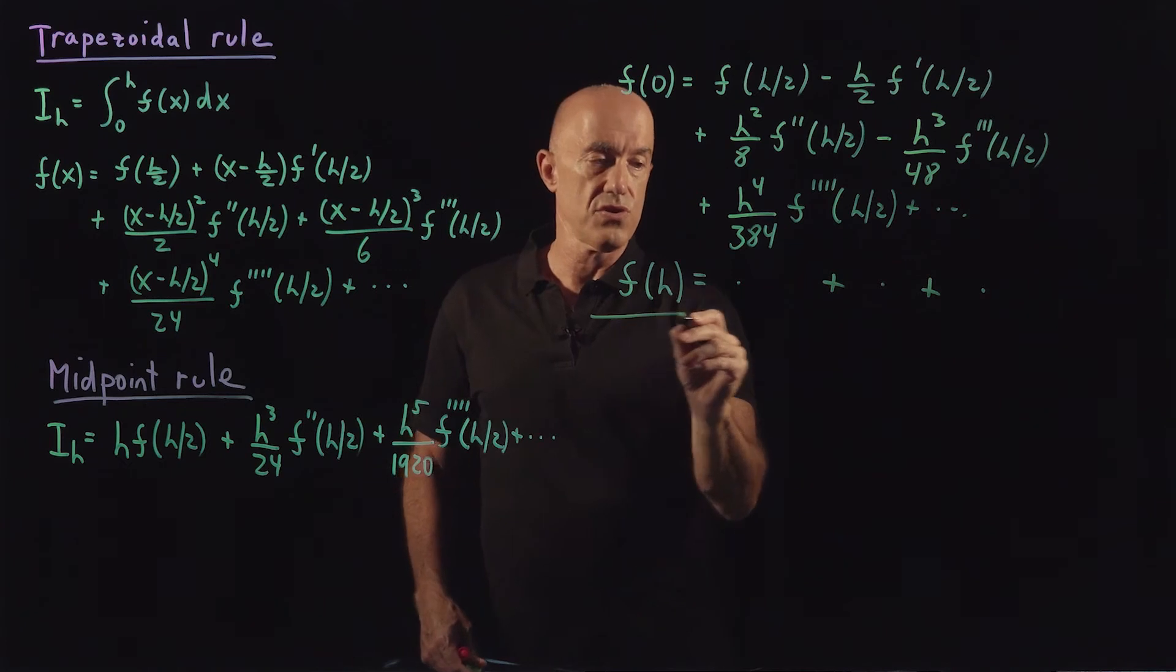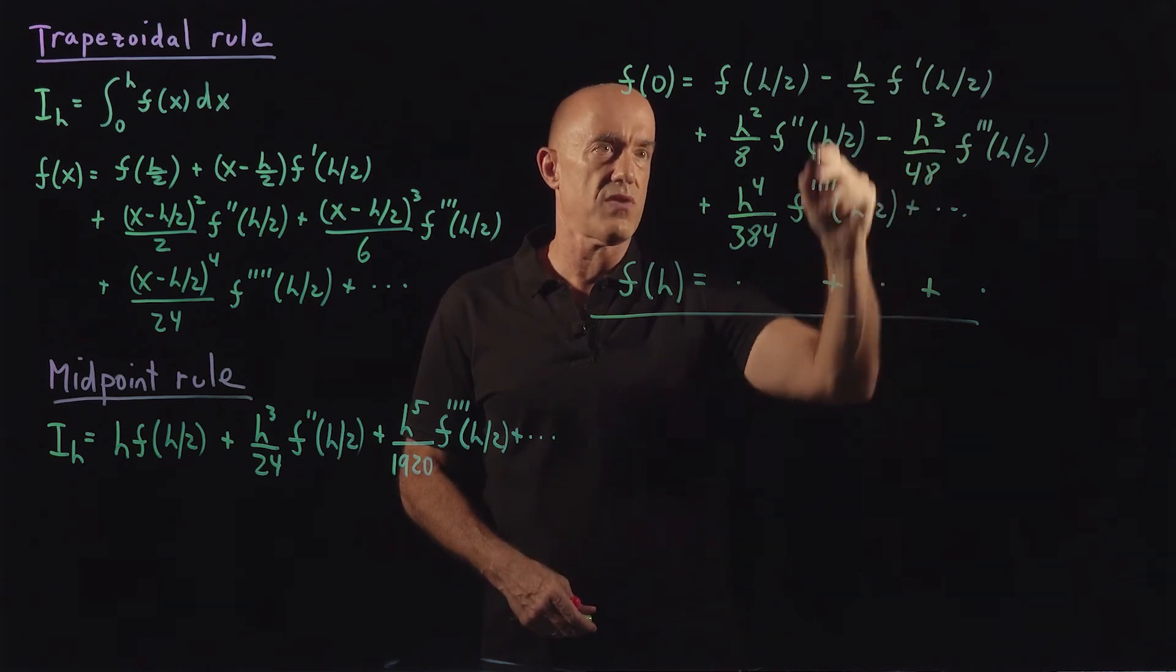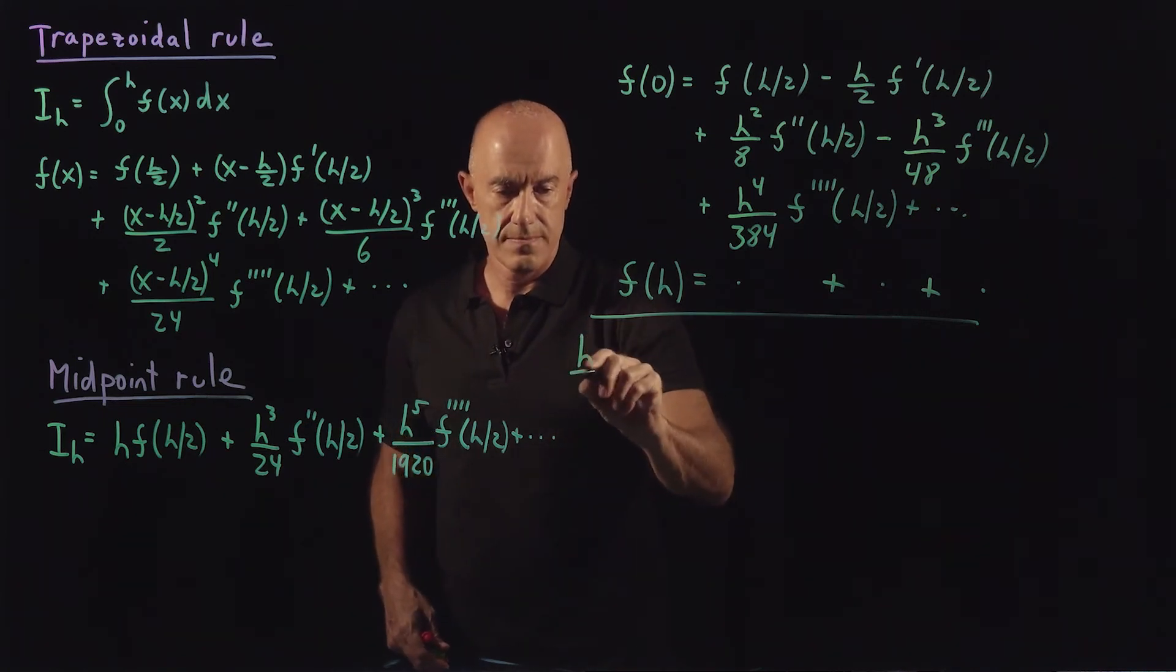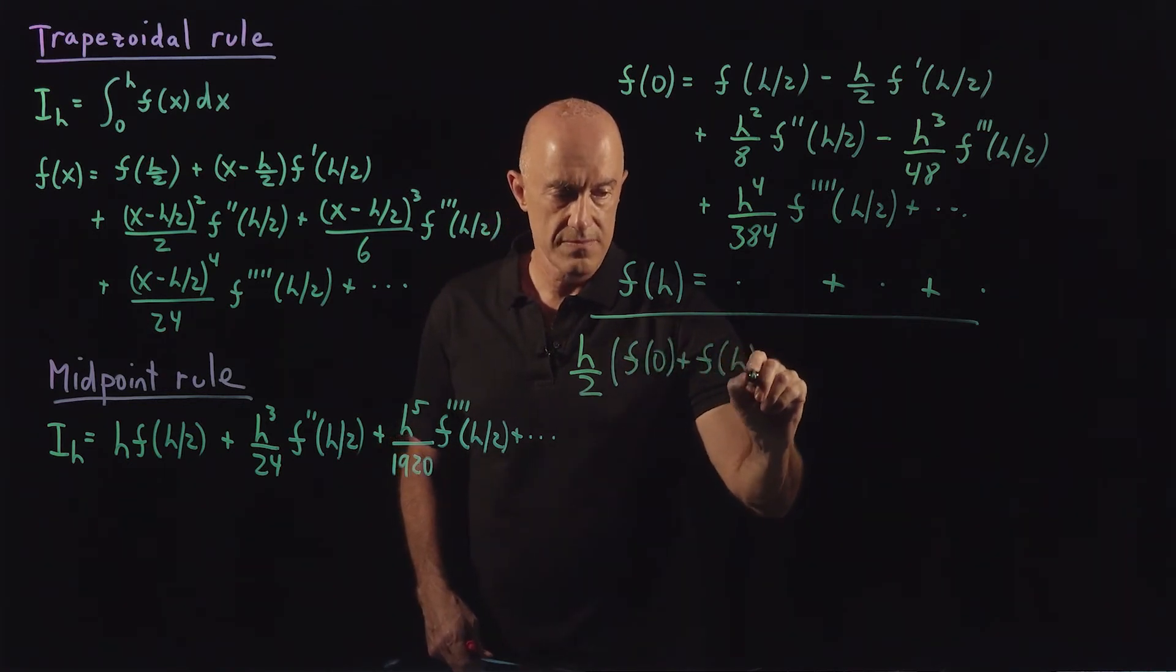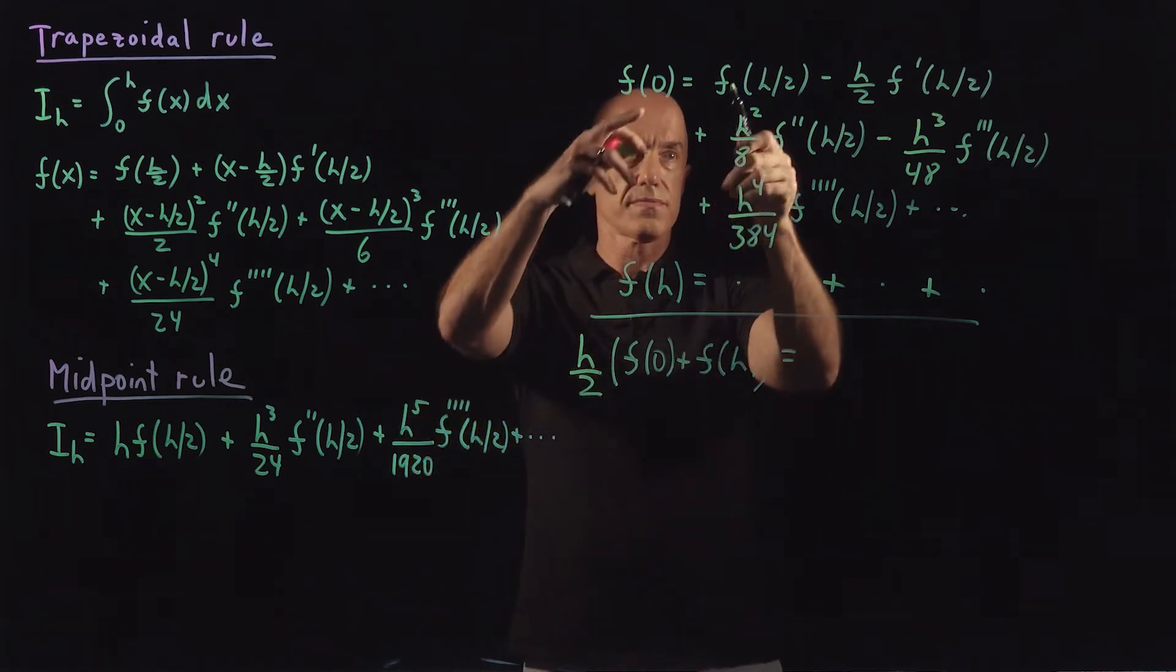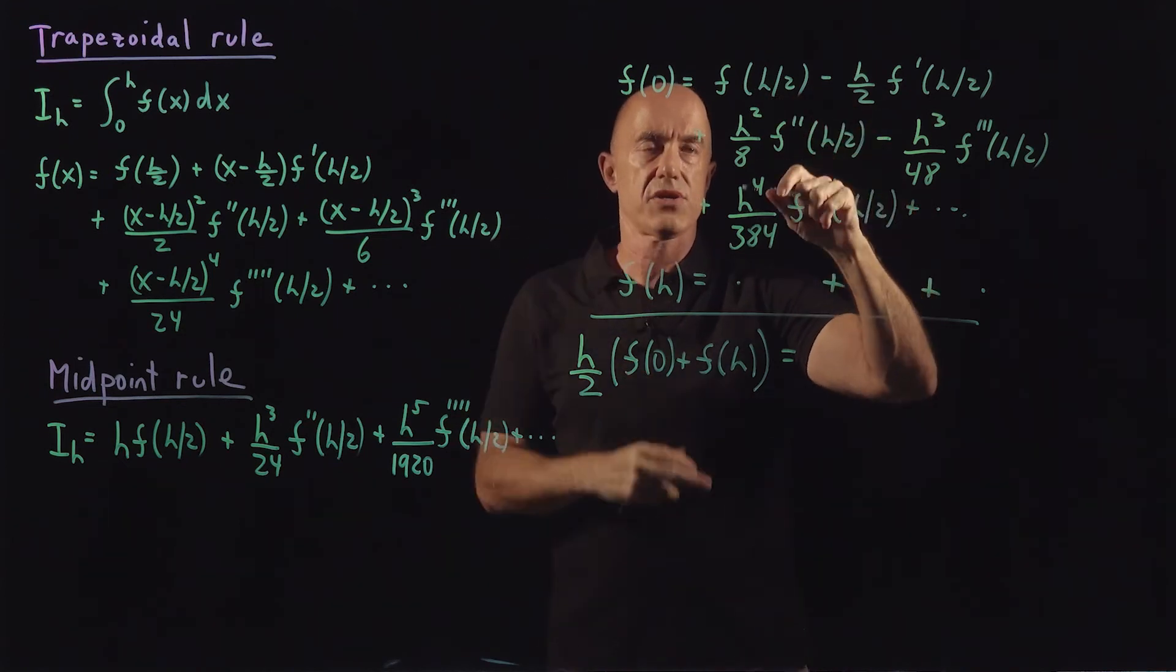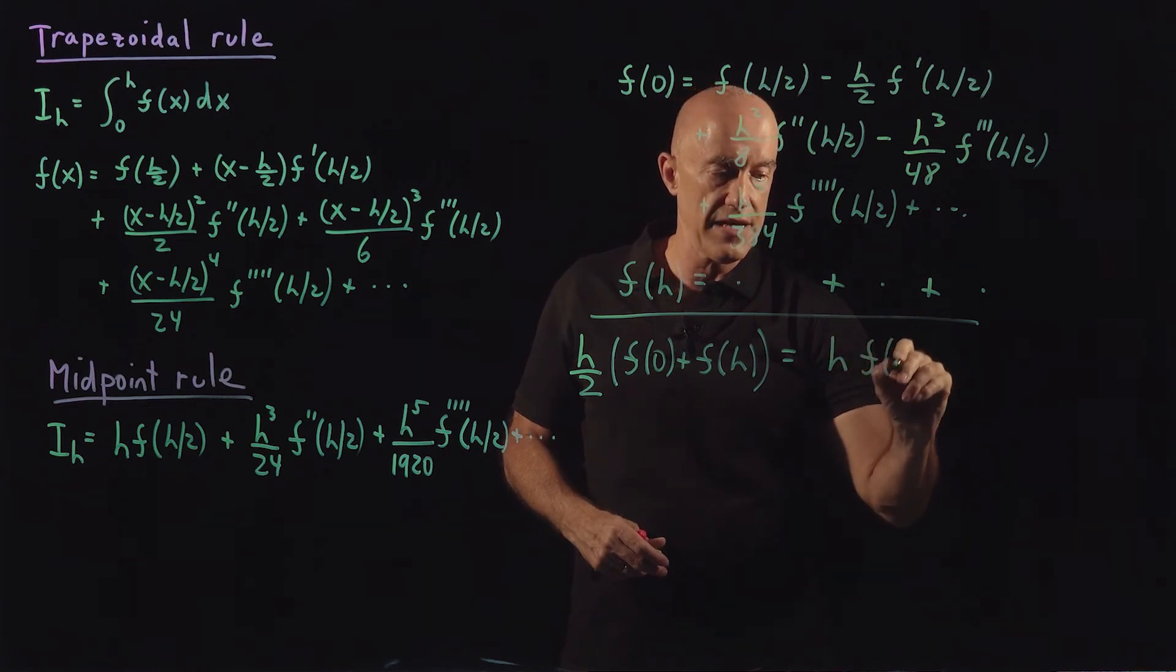So what we can do then is to add them, and the terms that are minus here will cancel. The terms that are plus will double, so we can look at (h/2) times f(0) plus f(h). And what do we get left? So all the minus signs cancel, all the plus signs add, and we divide by 2 and multiply by h. So the first term will be h times f of h over 2.